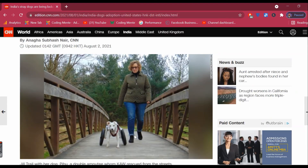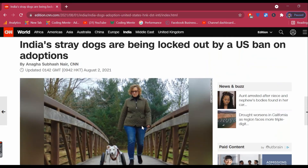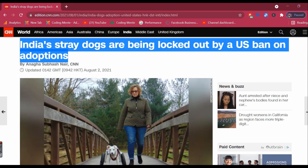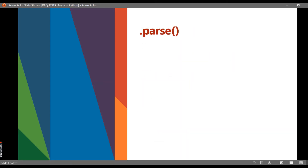Next is 'top_image' — there may be many images in an article, but the top image is categorized as the first image that appears. Then we have 'title', which is just the title of the article. The parse function, which I already discussed, must be used after downloading so that we can extract all these things — authors, publish date, top image, title. Finally, we have 'keywords' and 'summary', which are part of the NLTK integration where by importing NLTK we can extract keywords or a summary of the article.